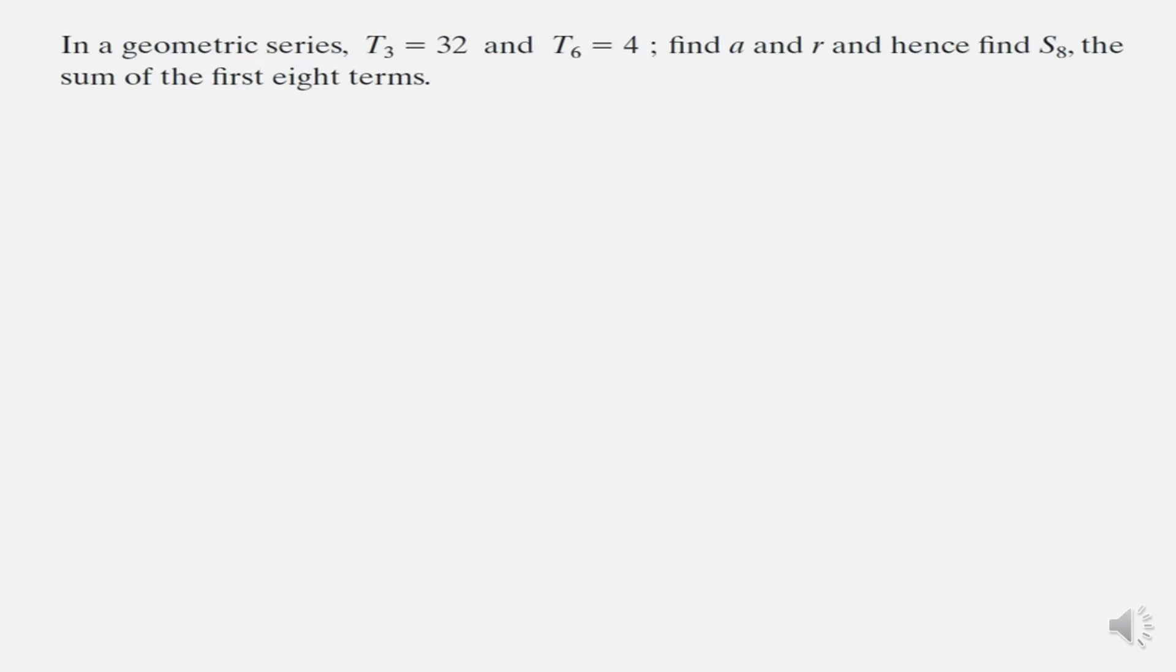Here's a question. In a geometric series, t3 is 32 and t6 is 4. Find a and r, and hence find s8, the sum of the first eight terms. So we have a job to do first to find a and r. The information we're given concerns term 3 and term 6. So we're dealing with terms. We'll use our tn formula, again from the formula books, and substitute for what we do know.